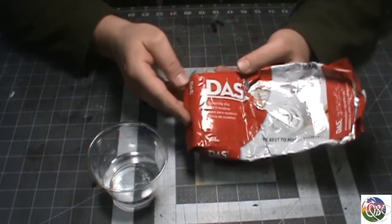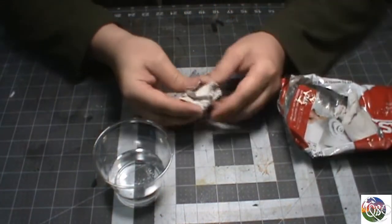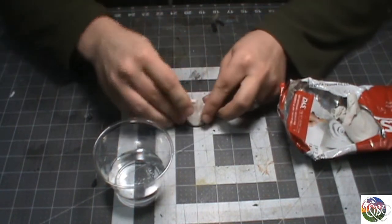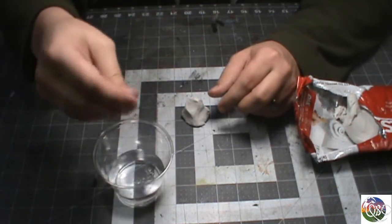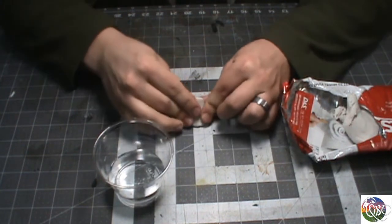We're going to start with the stalagmites. So I'm using Das clay just because that's what I have. You could use Crayola or green stuff or really anything you want. I just happen to have this. So all you need to do is pull out a chunk, squish it to your mat to give it a flat base, and then pull it up into a cone shape of some kind.